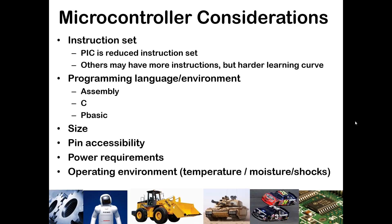Here are the basic things you want to consider. Number one is the instruction set. The real reason I chose the PIC for this class is that it has a reduced instruction set—when programming in assembly, we really only had about 35 commands to learn. You might also think about what programming language you need to use and whether you understand that language. In this course we've learned assembly and C; in a previous course you likely learned P-Basic for the Parallax Bobot.